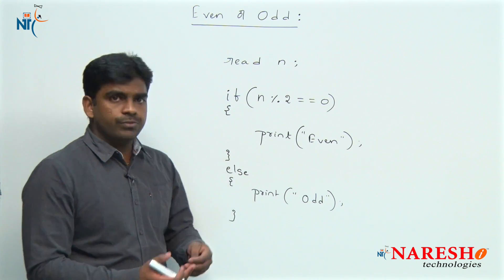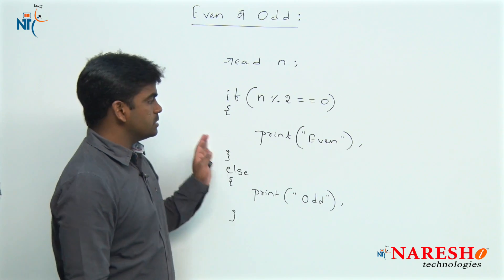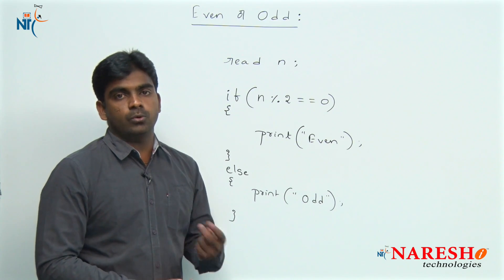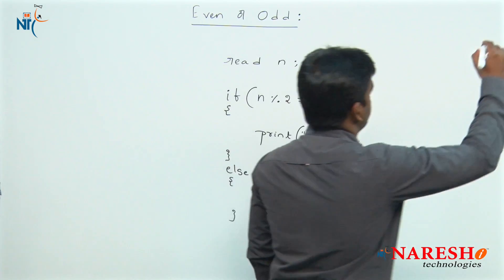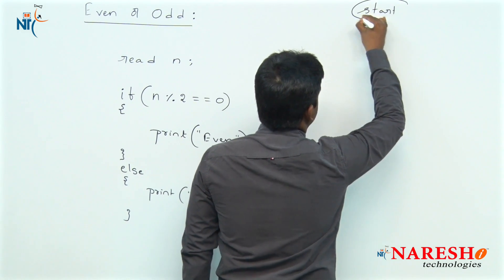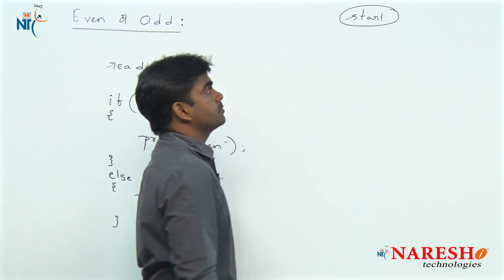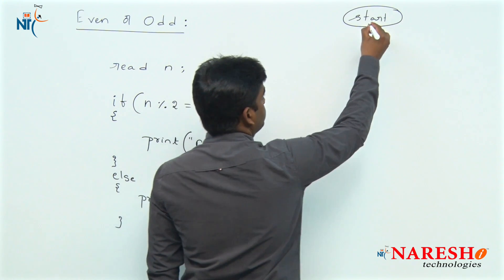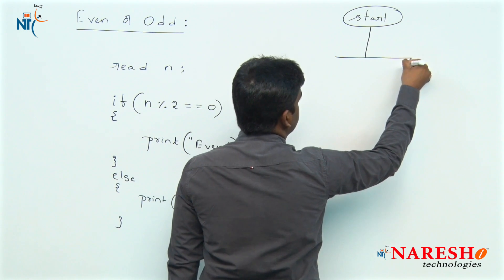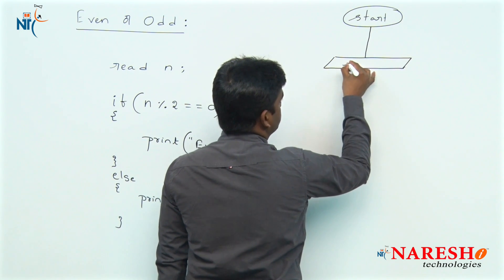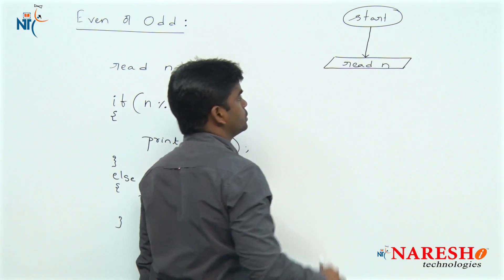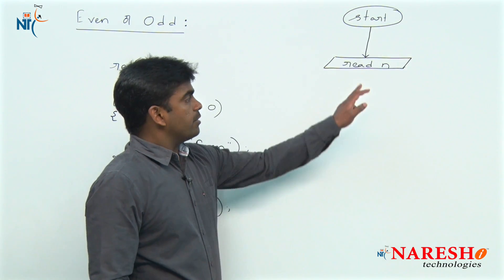Observe, the flow starts, and here we are finding, first we are reading n value. Reading n is a statement, and statements we need to represent using parallelogram in flowchart. After reading,